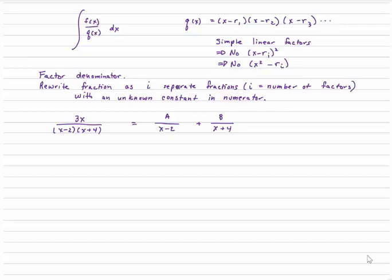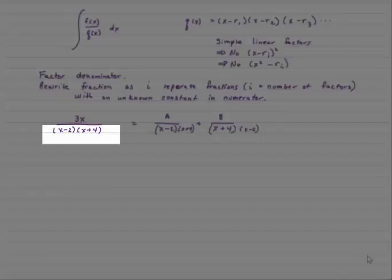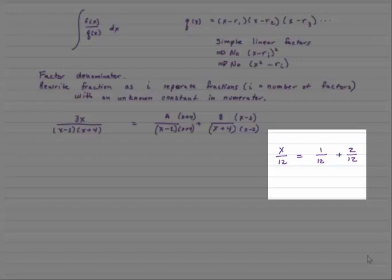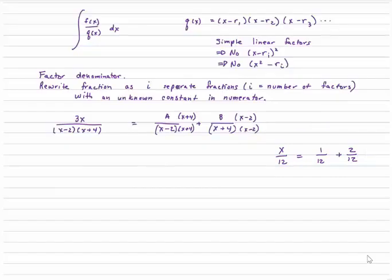The second thing we do is rewrite the fraction as i separate fractions, where i is the number of factors, with an unknown constant in each numerator. So let's do this to the example I just showed you. I first go ahead and make two separate fractions, and then I put an unknown constant in the numerators. These are going to be separate constants, so we want to use a, b, c, etc. And what do we do from here? Well, if I wanted to really add these together, I'd have to put them in terms of a common denominator. So to do that, they're both going to have to have this as their common denominator. But of course, I can't just multiply the denominator by something without also multiplying the numerator by the same amount.